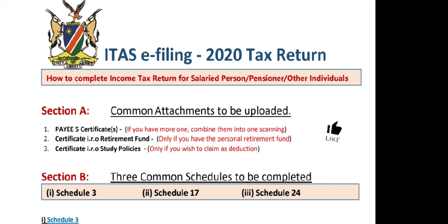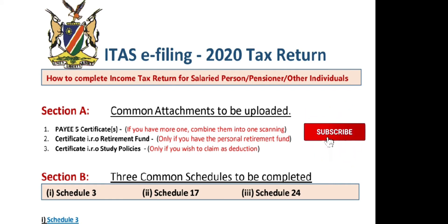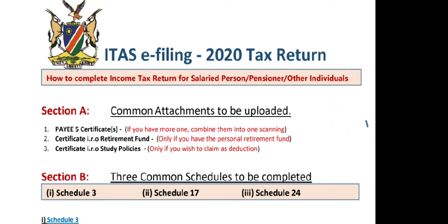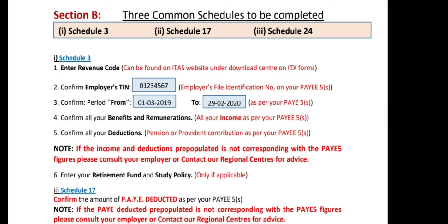Now we move on to this helpful guide which shows you how to complete the form. In Section A, you just need to have your documents ready: the PAYE5, your tax certificates, study policies, retirement annuity, and so on. Once you have those ready, you move on to Section B.